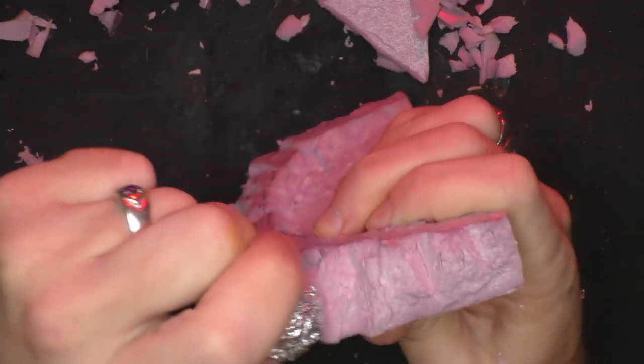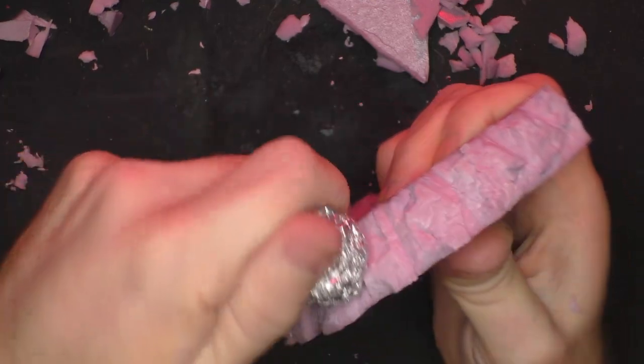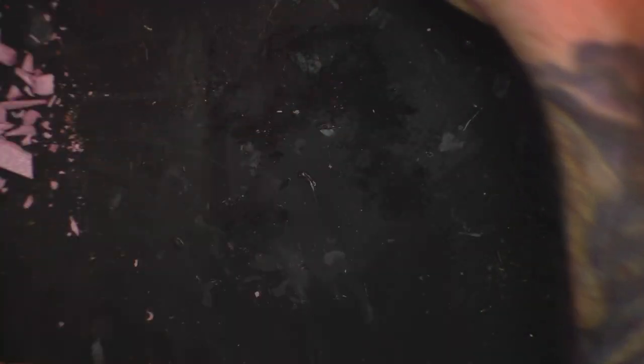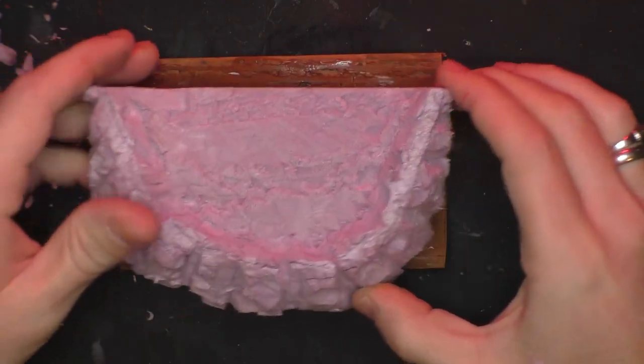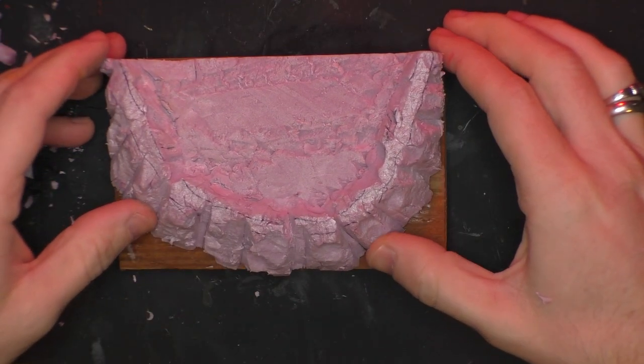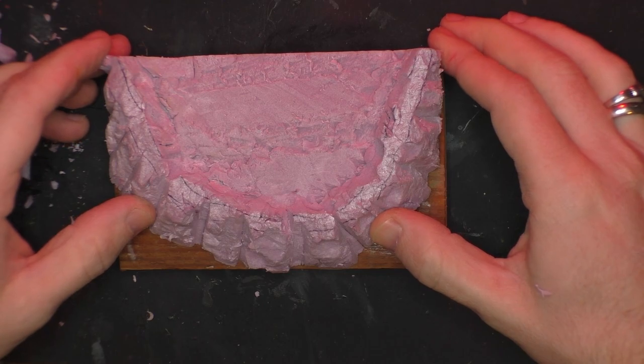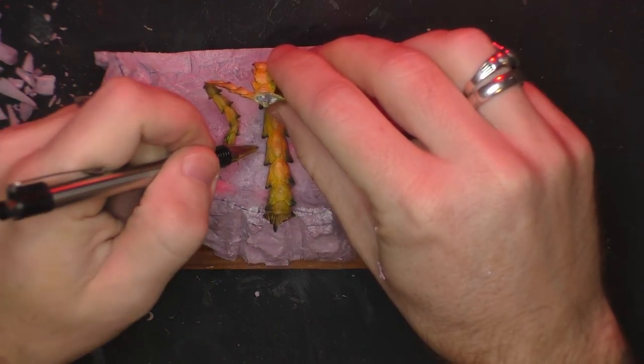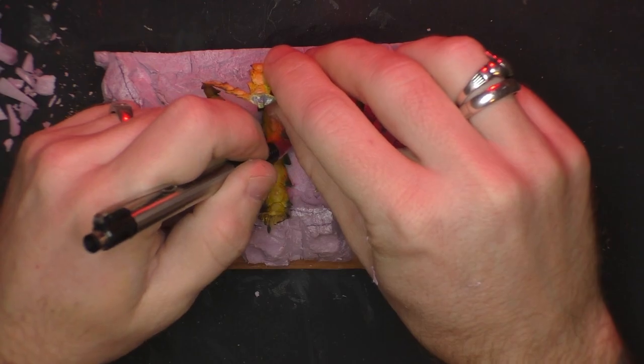And then the old tin foil, roughing it up, giving it some texture. Just attached it with some PVA glue. And then started marking out where it was going to need to be mounted.